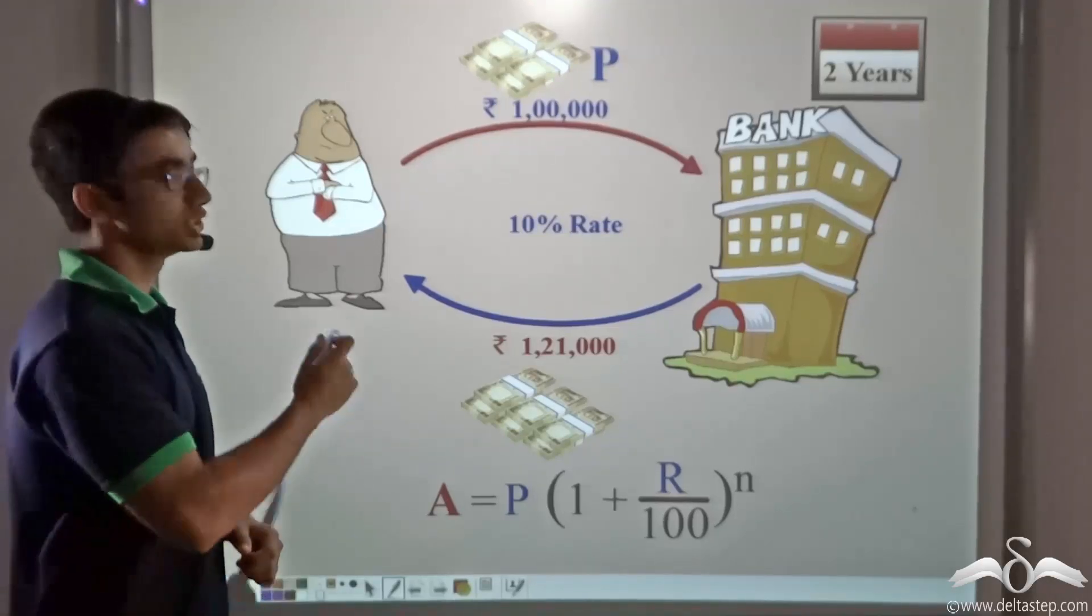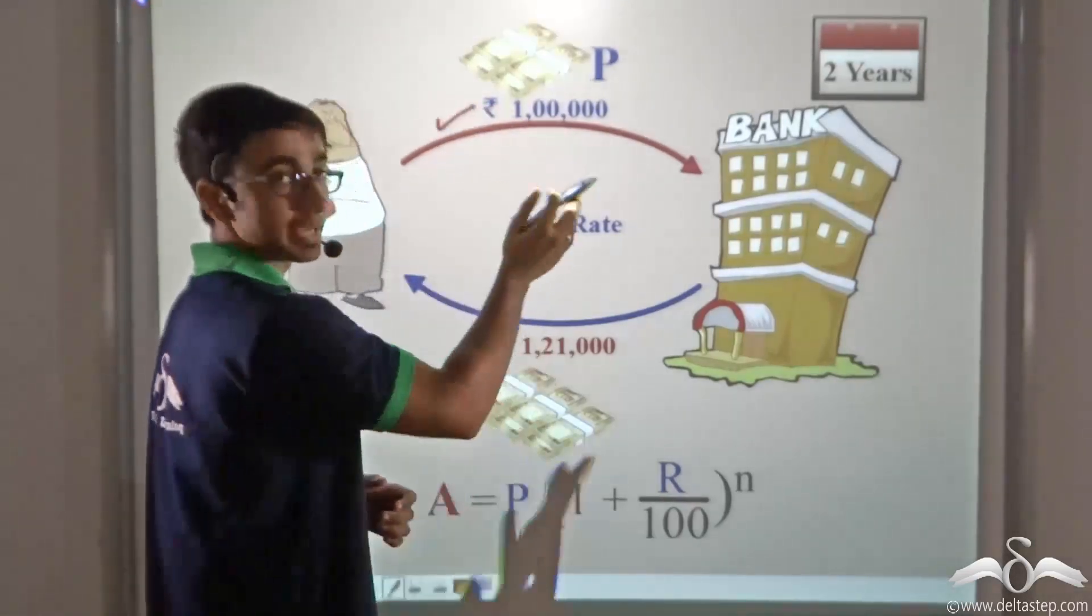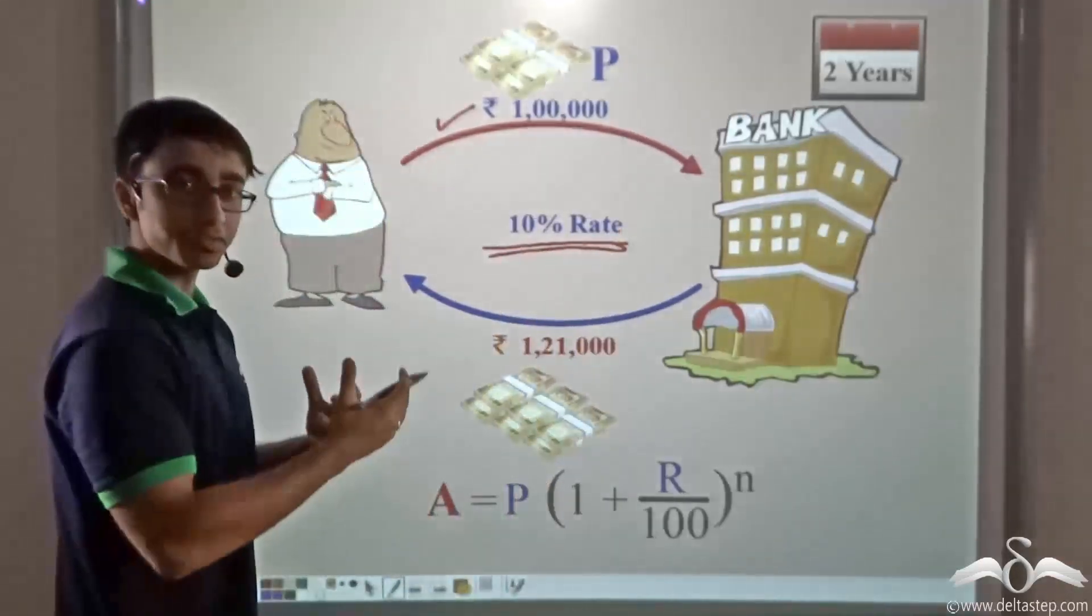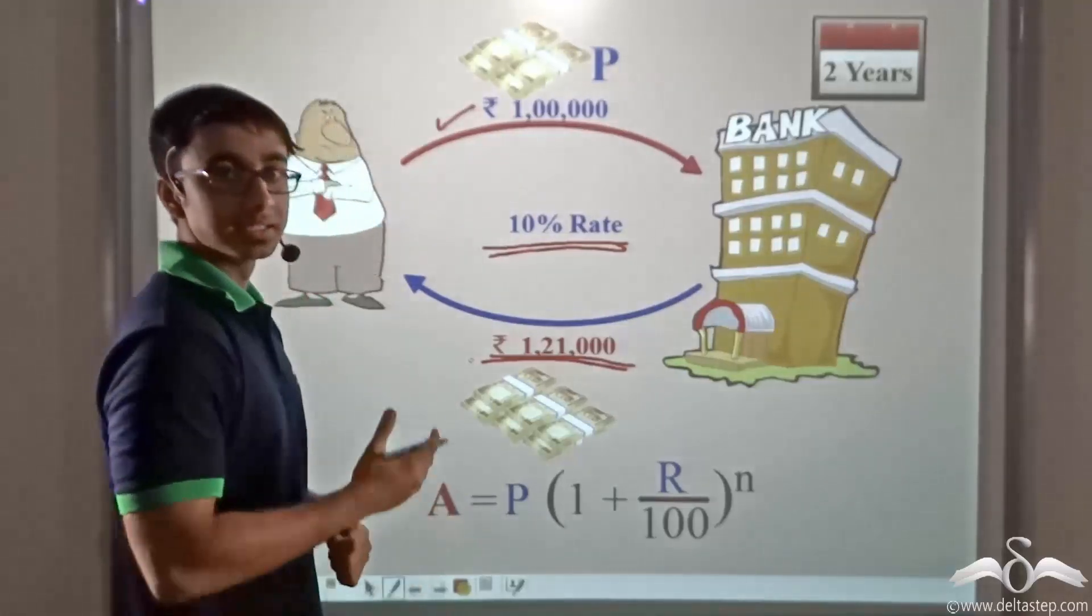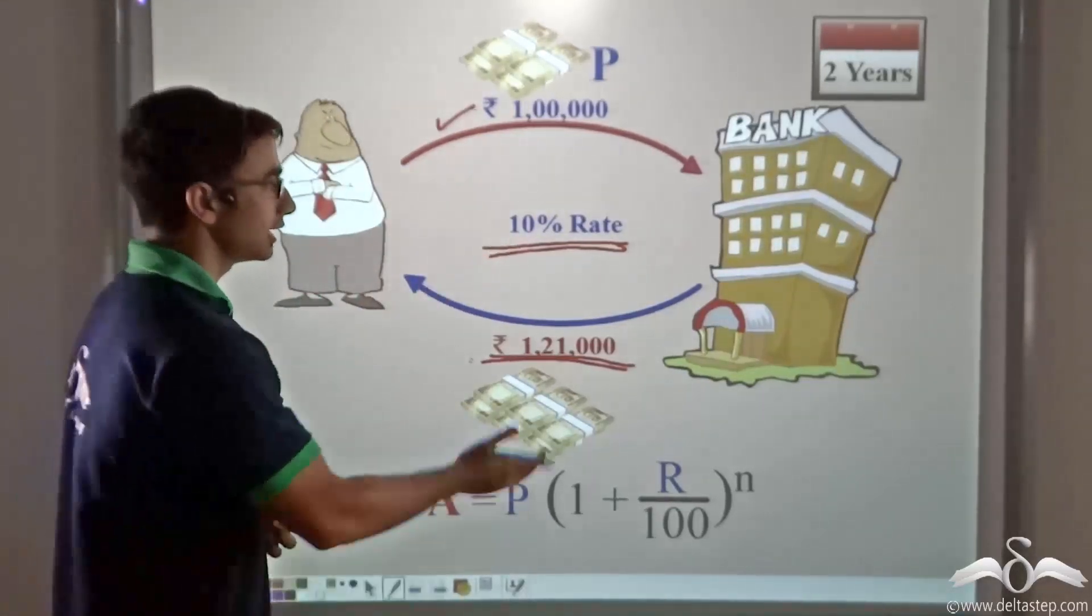We have found that when Sudhir is investing Rs 1 lakh in a bank at a rate of 10%, then at the end of two years he is getting back Rs 1 lakh 21,000. This is provided that the money is being compounded annually.